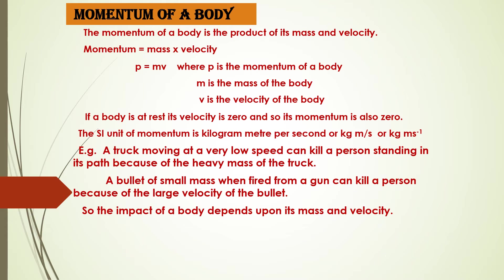A truck moving at a very low speed can kill a person standing in its path because of the heavy mass of the truck. At the same time, a bullet which has a very small mass can also kill a person if it is fired with a large velocity. So the impact on the body depends on mass and velocity — in other words, momentum of an object depends on its mass and velocity.